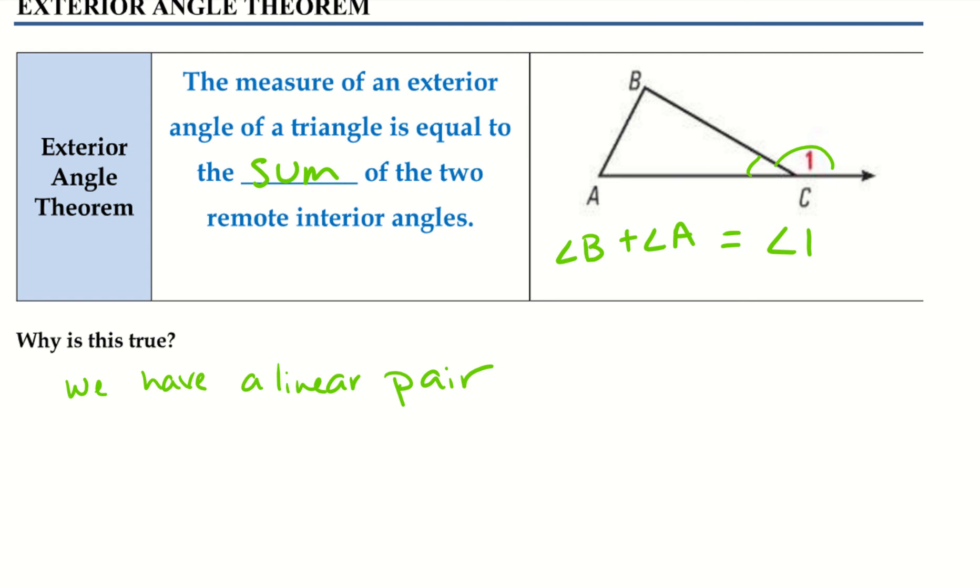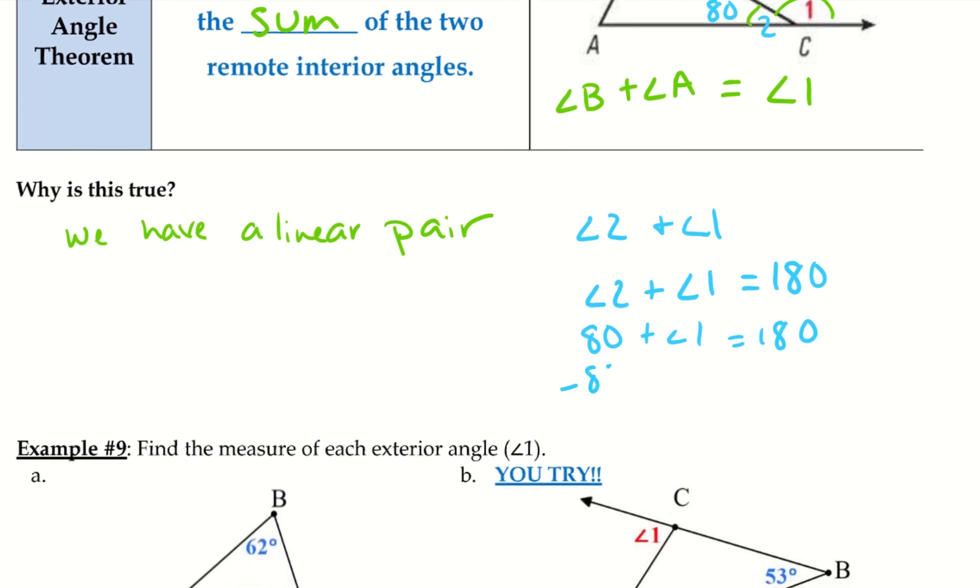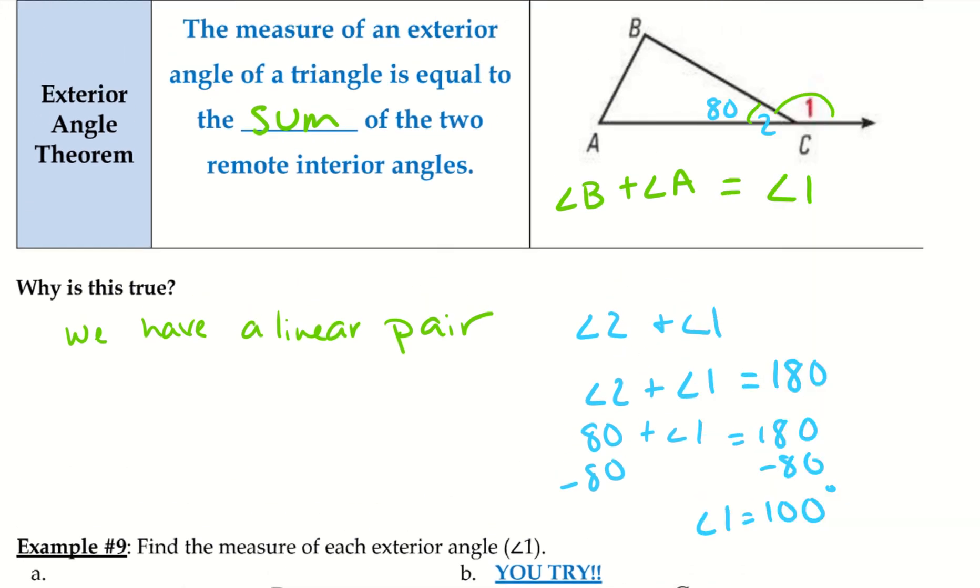Alright, so angle C, I'm going to label this one angle 2. So I know that we have a linear pair with angle 2 and angle 1. And those, if we add those together, remember linear pairs are supplementary, so they equal 180 degrees. So if we think about subtracting angle 2, let's give these some measurements. So let's say angle 2 is 80 degrees. So angle 2 is 80 plus angle 1 equals 180. Let's go ahead and subtract 80 from both sides. Angle 1 equals 100 degrees. So I know that angle 1 is now 100 degrees.